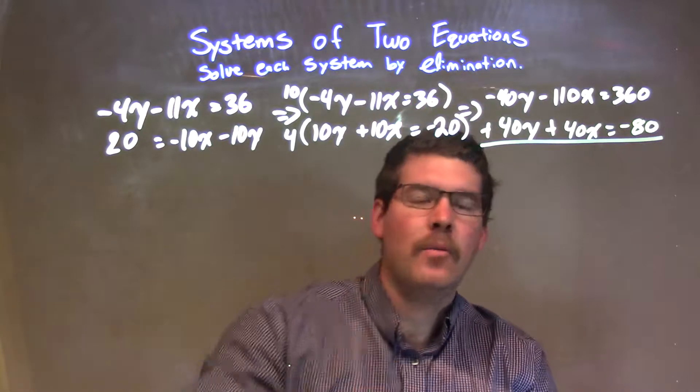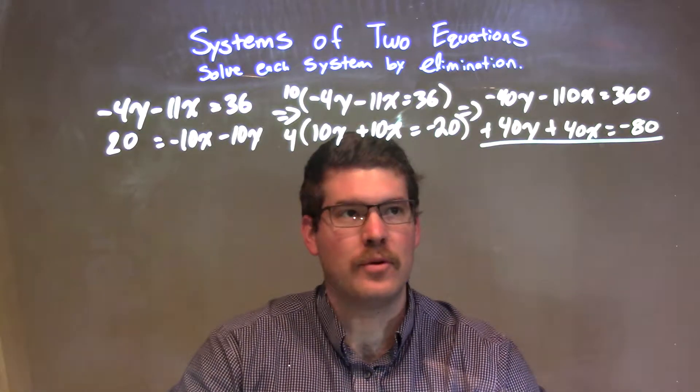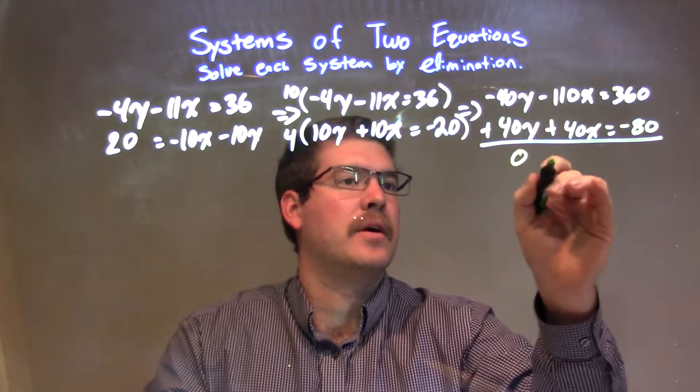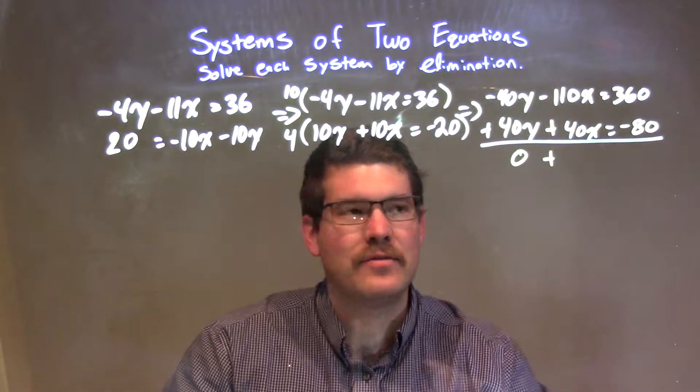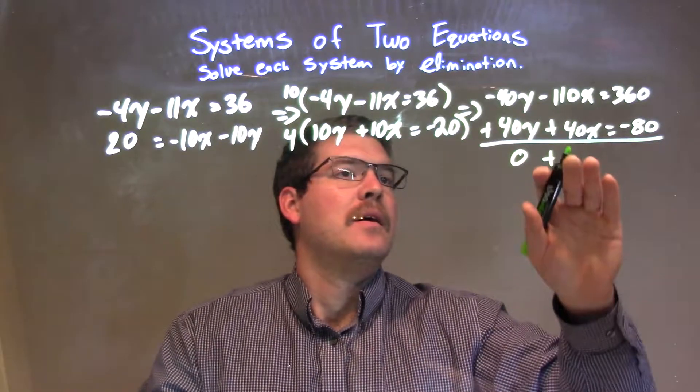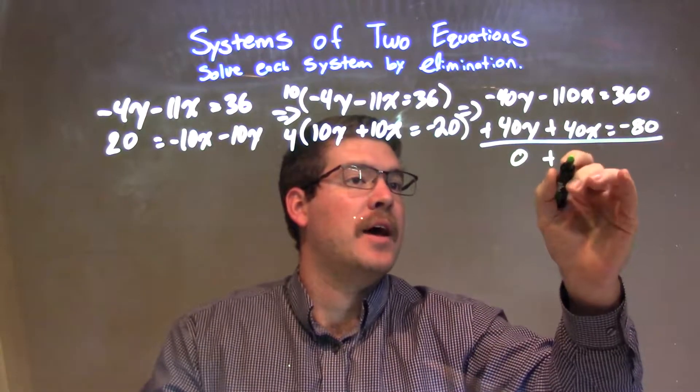I'm going to add these two equations. They should eliminate the y, which they do. Negative 40y plus positive 40y is 0. Now we have negative 110x plus positive 40x, which comes out to be negative 70x.